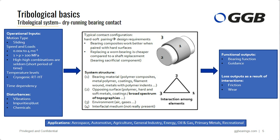The tribological system is the interaction among these elements. There will be some variables that are known — these are our inputs. Physical quantities that act on the system, for example load, speed, temperature, but also some disturbances like vibrations or impurities. By applying these inputs on the system, we generate some outputs — for example, wear and friction. Looking at this simple schematic, you can already appreciate how complex the tribological system can be.